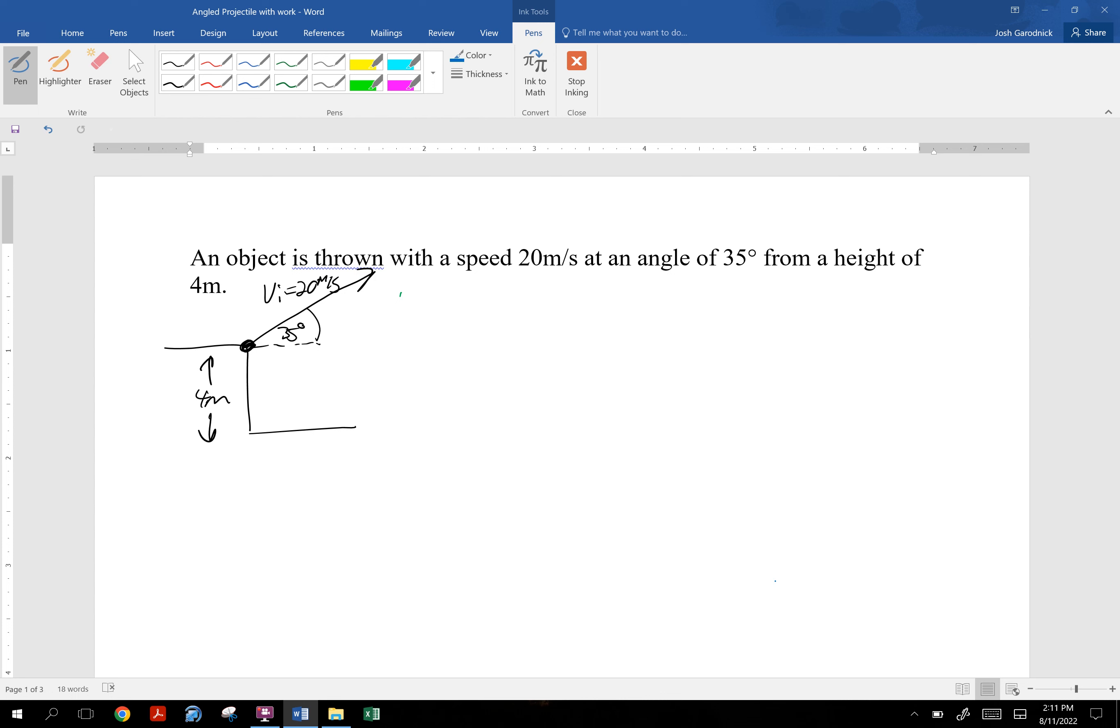This question has been left very vague, pretty simple. There's an object thrown with a speed of 20 meters per second at an angle of 35 degrees from a height of four meters.